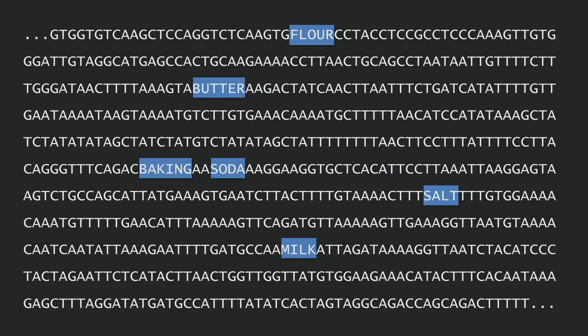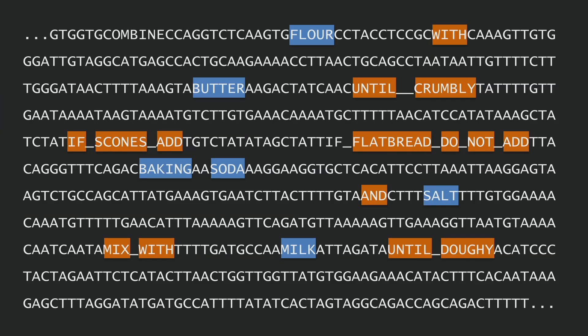The genome contains recipes for how to combine genes together in different ways to do different things. Think of genes as ingredients in a recipe — flour and butter, baking soda, and so on. In a recipe, what's the most important thing? The instructions. The instructions tell you how to combine the ingredients. The flour is combined with butter and mixed until crumbly. If you're making scones, then you'll add baking soda — but otherwise you don't. The recipe brings the ingredients to life.